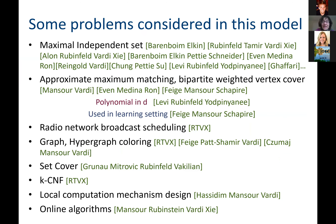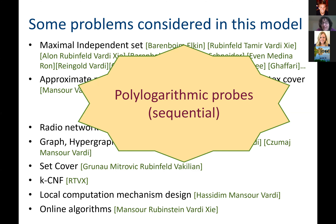Quite a few problems have been considered in this model in the last 10 years, starting with maximal independence, but also many other optimization problems such as max matching, vertex cover, broadcast scheduling, colorings of graphs and hypergraphs, set cover, logical problems such as satisfying assignments for conjunctive normal form, algorithmic game theory for mechanism design, and online algorithms. In all of these cases, you can get local computation algorithms which are consistent and use only polylogarithmic probes — a lot less than linear, which is a big savings.